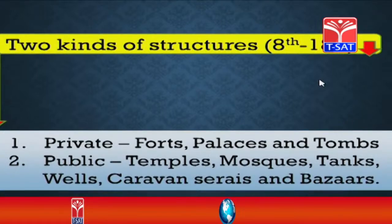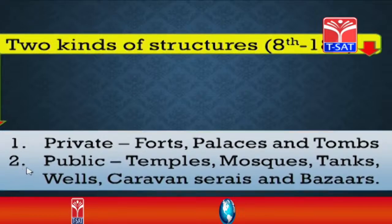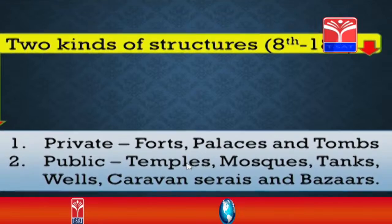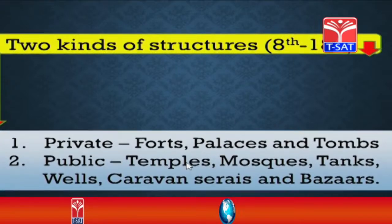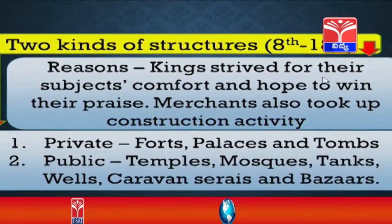Let us learn about two kinds of structures built between the 8th and 18th centuries. The first type is for private use — forts, palaces and tombs. The second type is for public use — temples, mosques, tanks, wells, caravans, serais and bazaars. Kings built these constructions because they strived for their subjects' comfort and hoped to win their prize. Not only kings but also merchants took up construction activity.